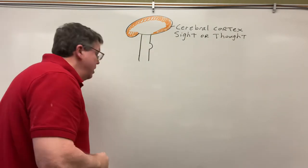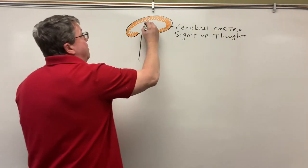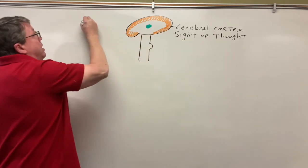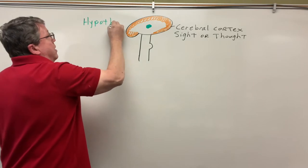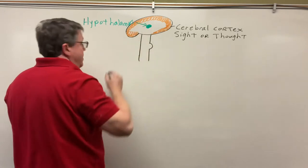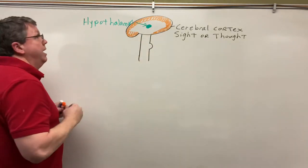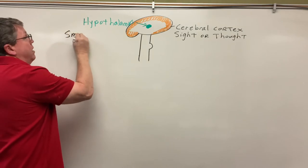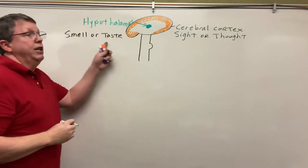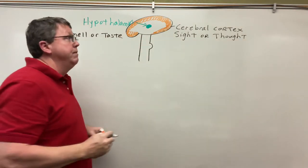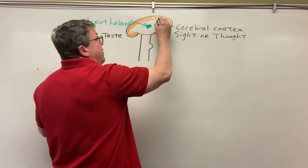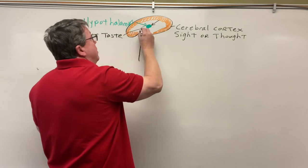In the brain we also have something called the hypothalamus. If we have the smell or taste of food, the smell and taste receptors are going to send signals to the hypothalamus. If it's the sight or thought, the cerebral cortex is going to send signals to the hypothalamus.